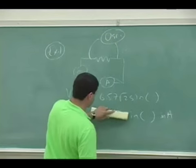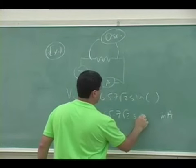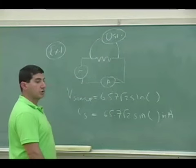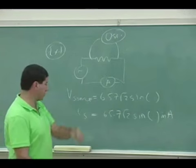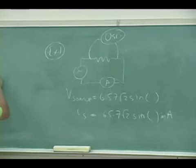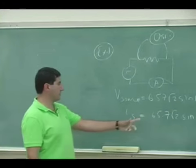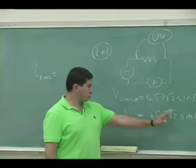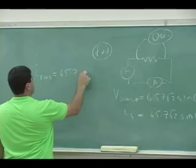And the current should be this times root 2 sine of this. So what should the ammeter measure if I put the ammeter hooked up to the circuit? The ammeter is just simply going to be this divided by root 2, so the root 2 root 2 cancels, so it's just going to be 65.7 milliamps.